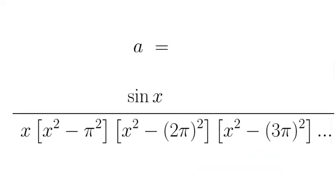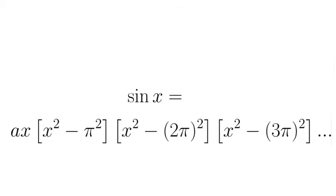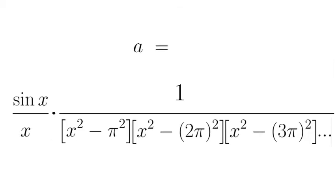We shift everything under the sine x, isolating the a. We again wish to evaluate at x equals 0. We can take advantage of the fact that the limit of sine x over x as x approaches 0 is 1.